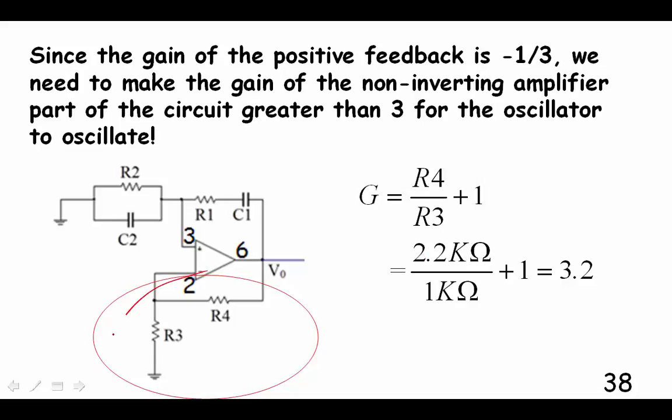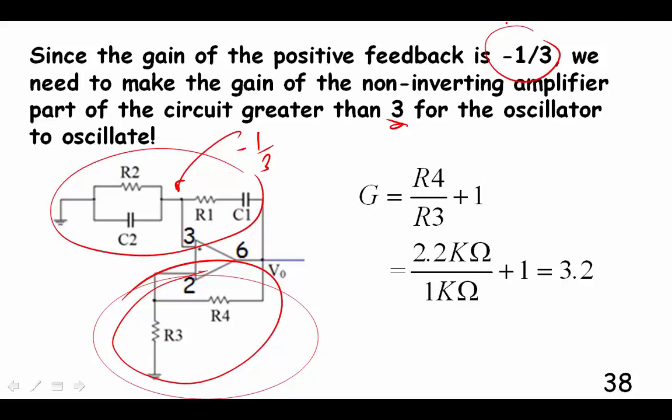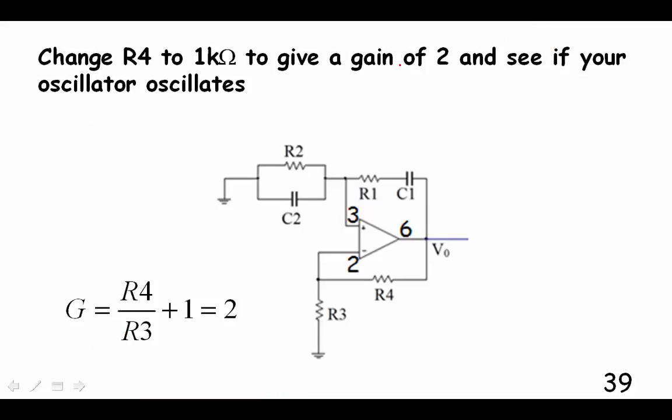We need the gain for this part of the amplifier to be greater than 3 because the gain of this part is cutting it down by 1/3rd. When you multiply the two together, it's the same as adding the decibels. We multiply the negative 3 by the 3 and we get 1. In part of the lab, you're going to change this resistor and make it smaller, which is going to make your gain smaller. Do you think that your oscillator will oscillate if its gain is 2 when we need a gain of 3? Probably not.